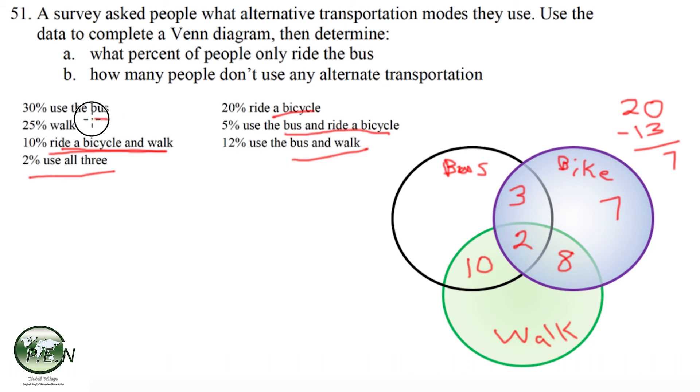For those that use the bus, there's 30%. We've already accounted for 10 plus 2 is 12 plus 3 more is 15. We've already counted for 15. So when we do that subtraction, there's another 15 that only take the bus.